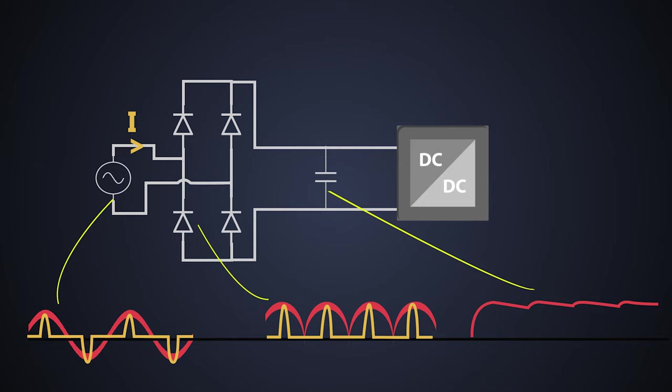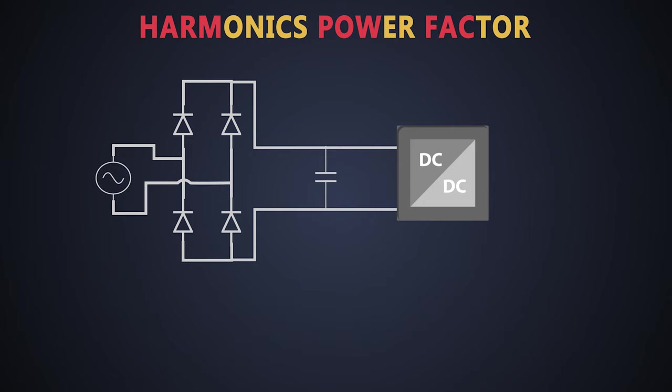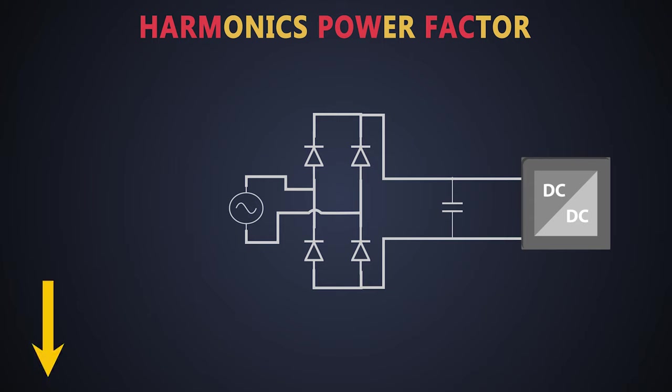So because of that, we get the inefficient power factor from the electronic appliance. And this type of power factor is known as harmonic power factor. To know more about the basic concept of power factors, watch my previous video. I have attached the link of that video in the description. Now you can click on this card above.